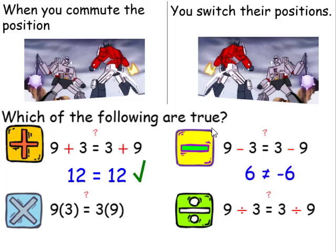9 minus 3 is 6, and 3 minus 9 is negative 6, so this is not true. 9 times 3 is 27, and 3 times 9 is also 27, so this is true. 9 divided by 3 is 3, and 3 divided by 9 is 1 third. This is not true.